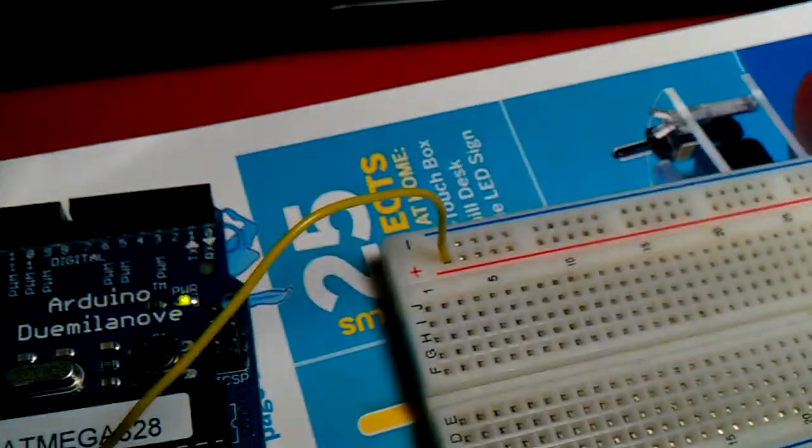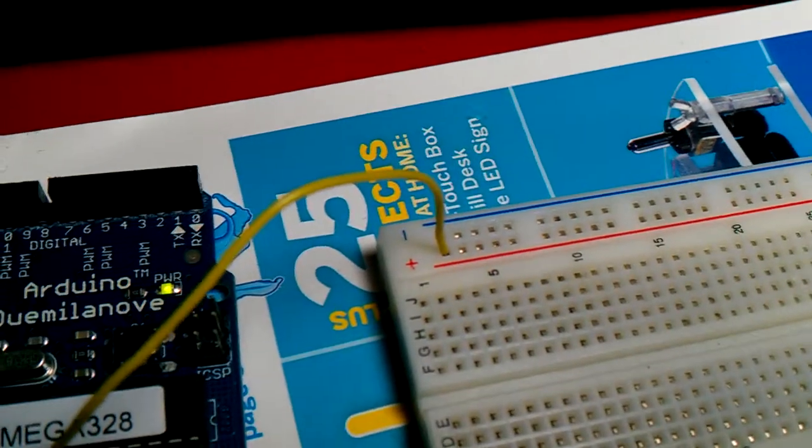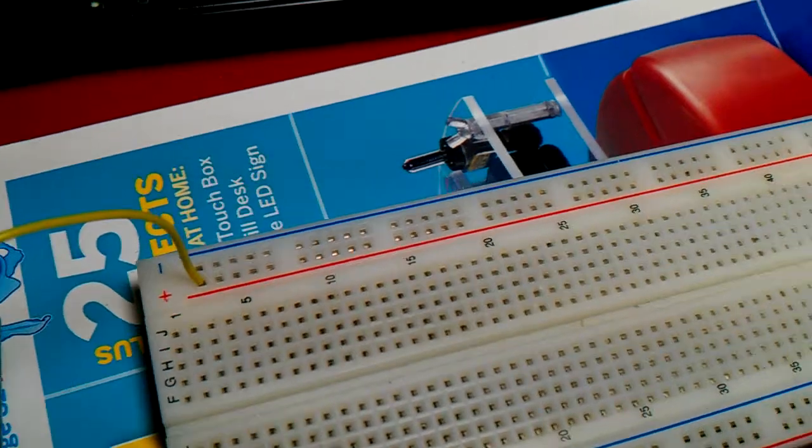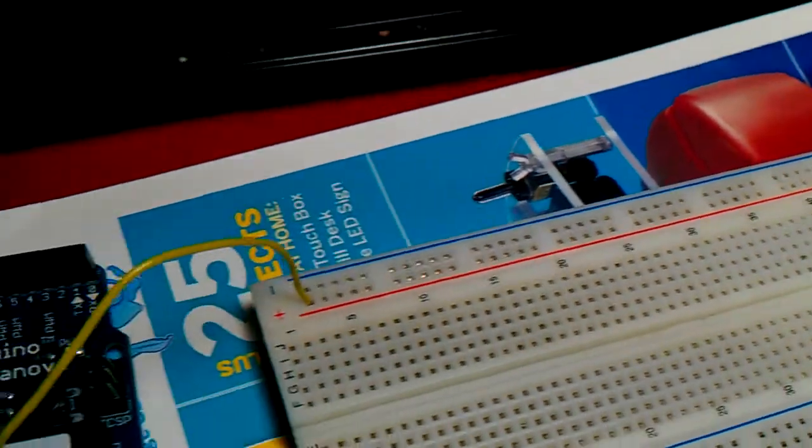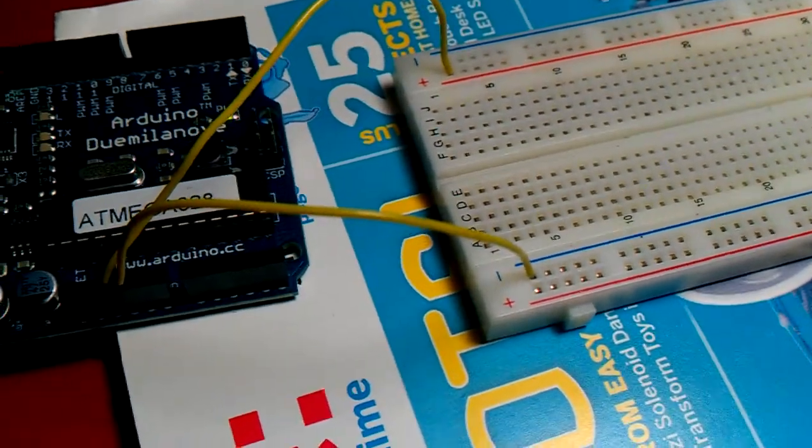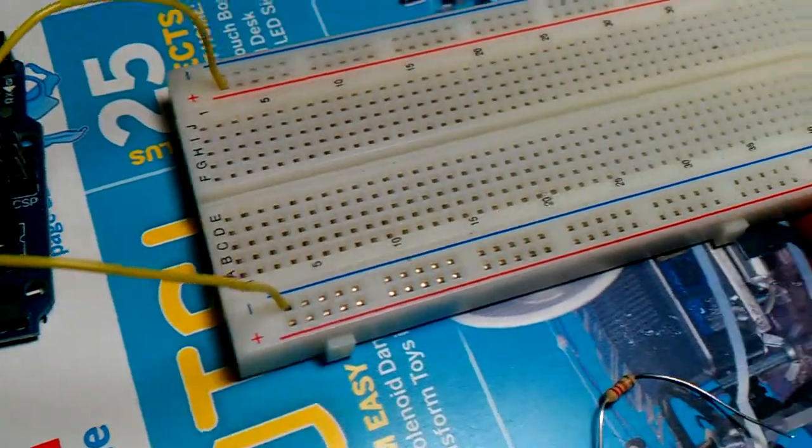The 5 volt pin is running to the positive rail at the top of the breadboard. And the ground pin is running to the negative rail on the bottom of my breadboard.